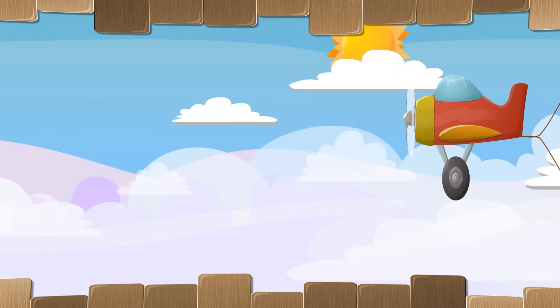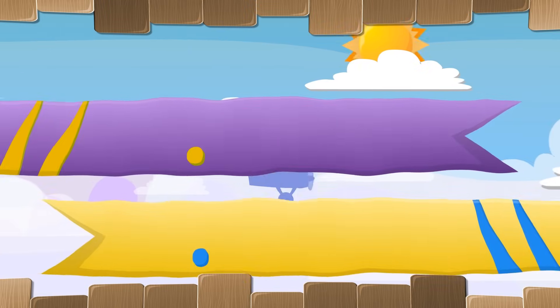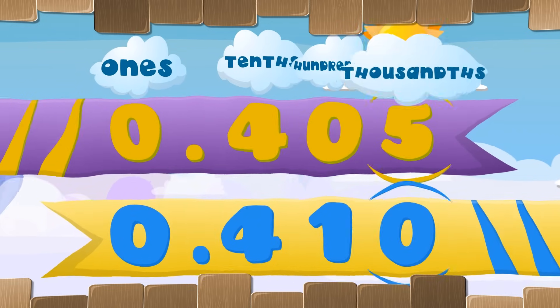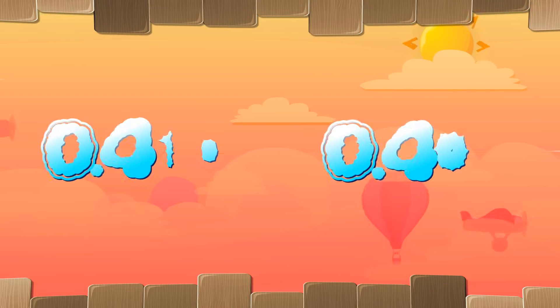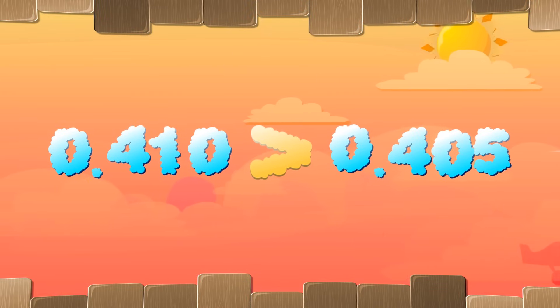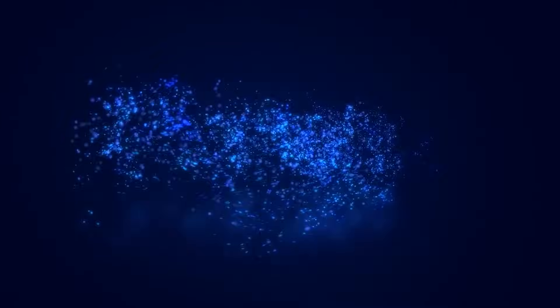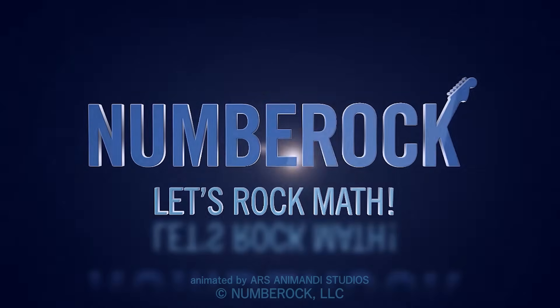Line up the decimal points vertically. Look left to right horizontally. Compare the greatest place that's different. The greater number will become apparent. The greater number will become apparent.